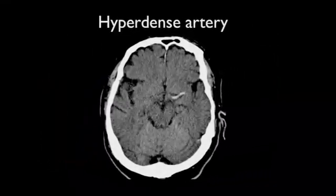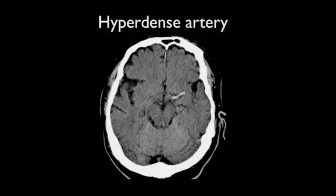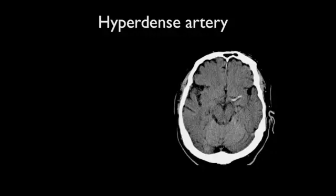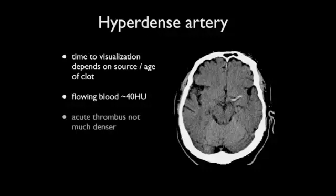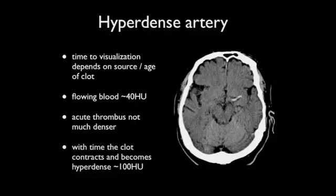The hyperdense artery is a well-known sign on non-contrast CT scanning and represents direct visualization of the clot within the lumen of the occluded artery. It relies on the fact that clot is hyperdense when compared to normal flowing blood. However, this depends on the age of the thromboembolism. Flowing blood typically has a density of approximately 40 Hounsfield units, although this varies depending on the hematocrit and state of hydration. Acute thrombus is not significantly denser than this. However, with time, it becomes progressively more hyperdense, reaching densities of up to 100 Hounsfield units.